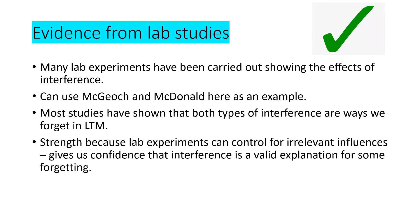Now for some evaluation points. First, a strength: evidence from lab studies. Many lab studies have been carried out showing the effects of interference — you can use McGauch and McDonald as an example. Most studies have shown that both types of interference are ways we forget in long-term memory, giving us a good bank of support. It's a strength because lab experiments can control for irrelevant influences and have high control over extraneous variables, giving us confidence that interference is a valid explanation for some forgetting.